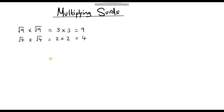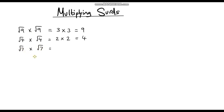Now let's move over to some surds and see if we can apply the same rules. So let's say we had the square root of 7 — that's definitely a surd, we can't take the square root of this number; we would just get a decimal that goes on forever. So the square root of 7 multiplied by the square root of 7 — what do you think the answer would be? Well, if we look at the same pattern as before, if we're taking the square root of a number and then multiplying it by itself, we're just going to be left with that original number. So our answer is just going to be 7.